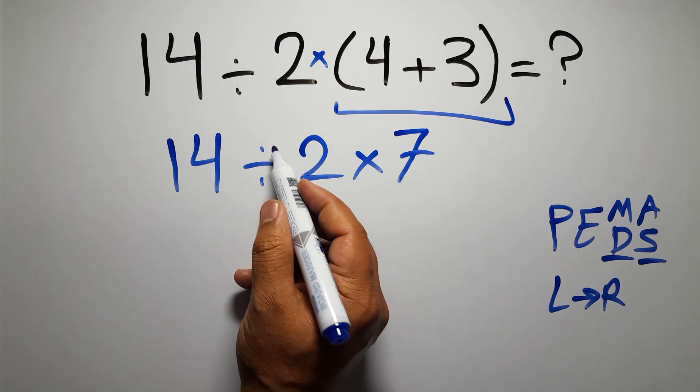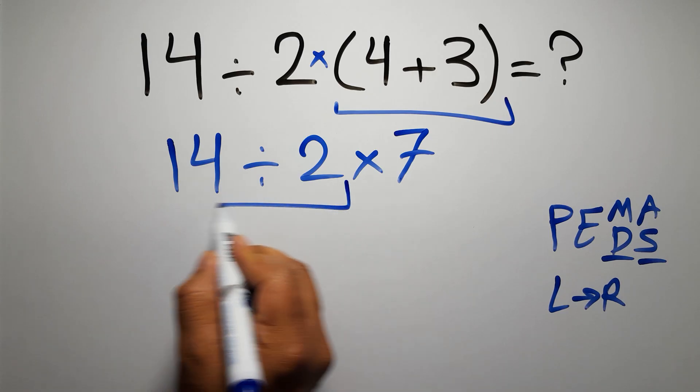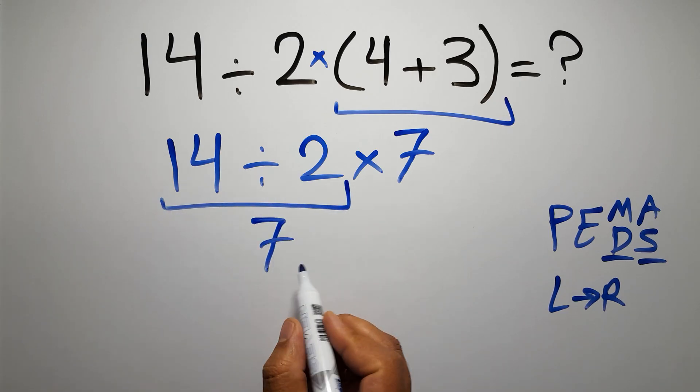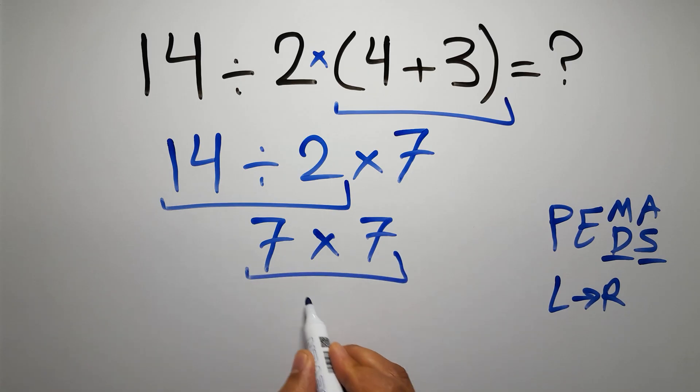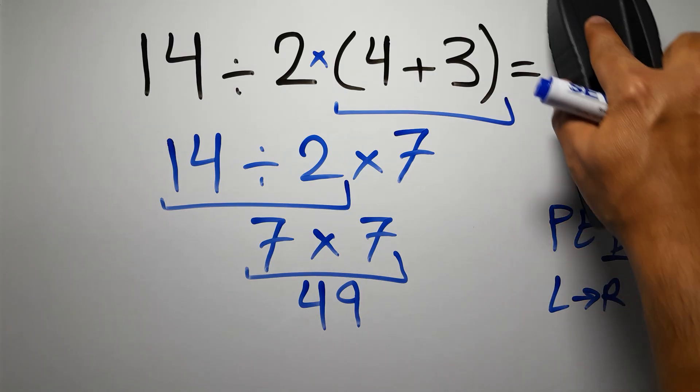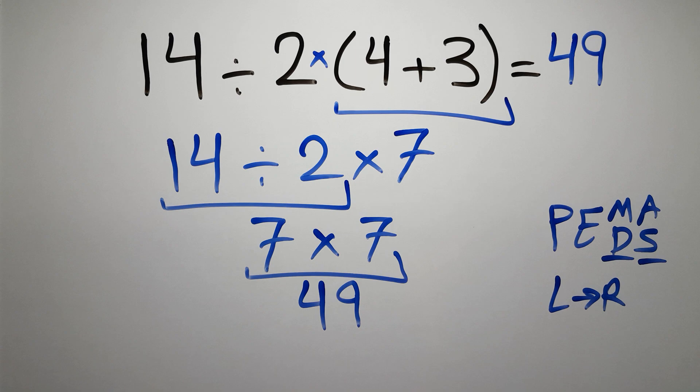So here first we have to do this division. 14 divided by 2 is just 7, and 7 times 7 gives us 49, and this is our final answer to this problem. The correct answer is 49.